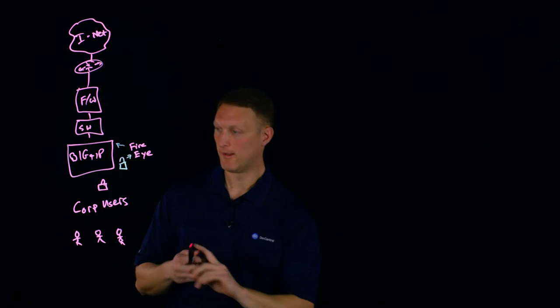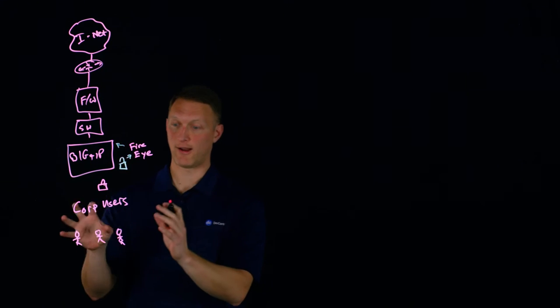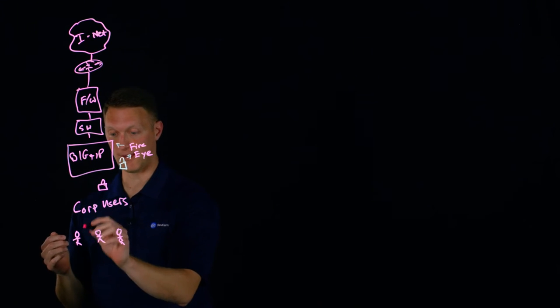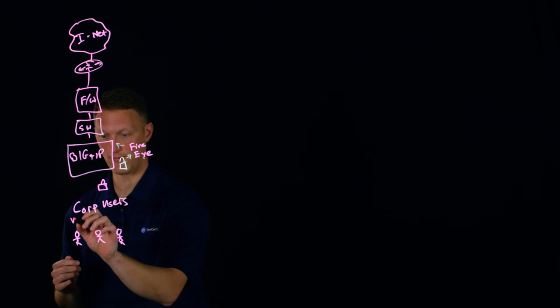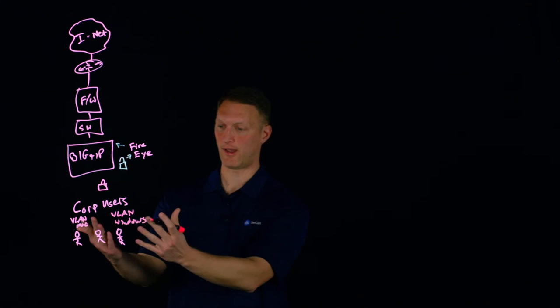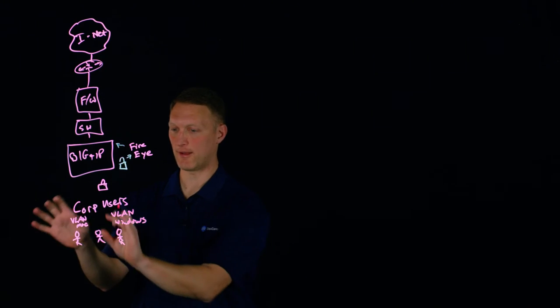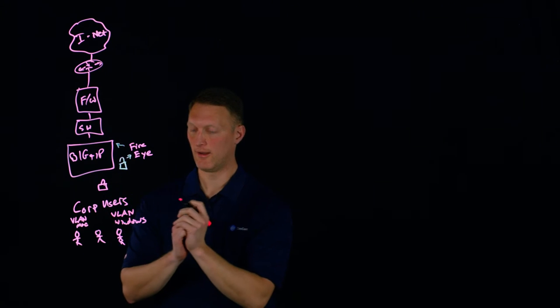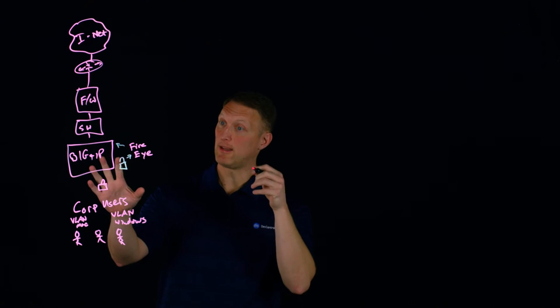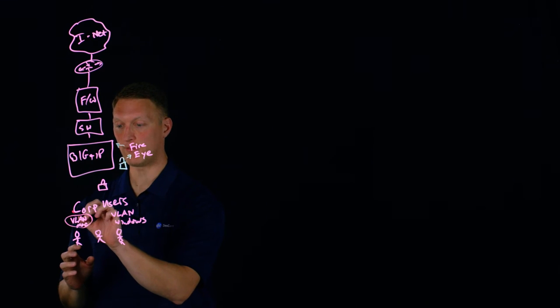Another thing that you can do with the BIG-IP and FireEye is you could set up different VLANs. I'll put VLAN Mac over here and I'll put VLAN Windows over here. You can take your side - you're a Windows guy or your Mac guy - and say you have a couple different VLANs configured on your corporate network.